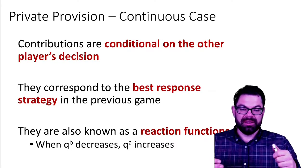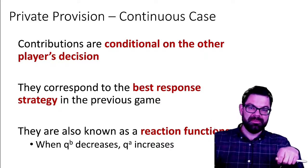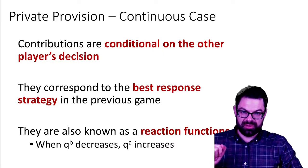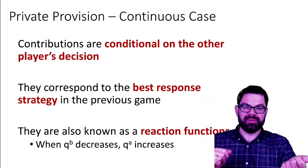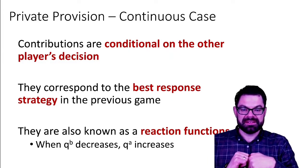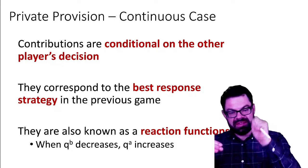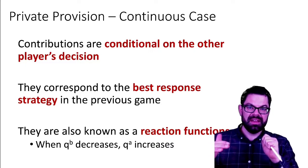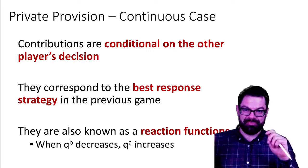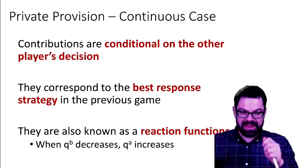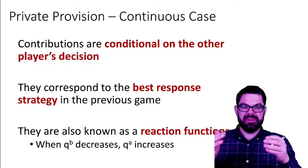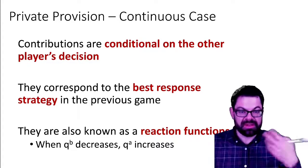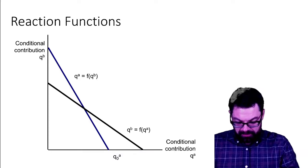For a given desired level of the public good, if the other person decides to pay more for that level, I need to pay less and can enjoy the public good while spending the rest on the private good. Conversely, if the other person decreases their contribution, it might be optimal for me to increase mine because I want the public good at a certain level. So the optimal contribution need not necessarily be zero for either of them, since they also enjoy and benefit from the public good.